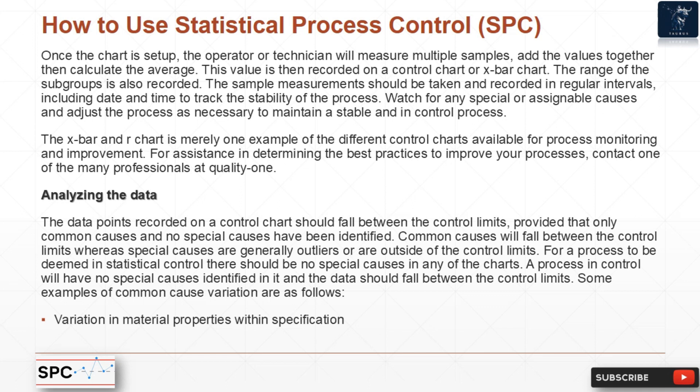Sample measurements should be taken and recorded at regular intervals, including date and time, to track the stability of the process. Watch for any special or assignable causes and adjust the process as necessary to maintain a stable, in-control process.